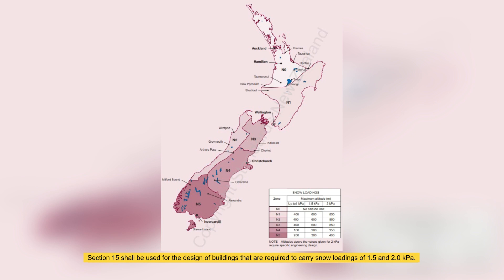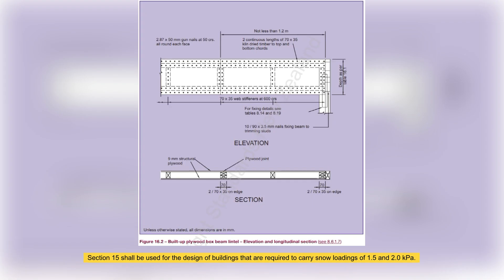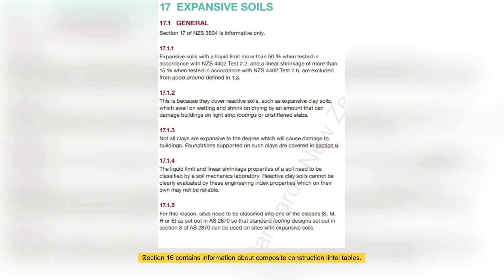Section 15 shall be used for the design of buildings that are required to carry snow loadings of 1.5 and 2 kPa. Section 16 contains information about composite construction lintel tables. Section 17 is about expansive soils and is informative only.